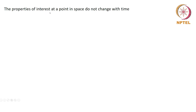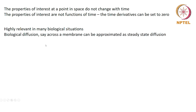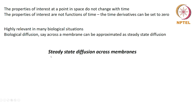As you already know, the properties of interest at a point in space do not change with time at steady state — that is the definition of steady state. What it means is that the properties of interest are not functions of time; the time derivatives can be set to zero. It is highly relevant in many biological situations. Biological diffusion across a membrane can easily be approximated as steady state diffusion in a wide variety of situations, and that is what we are going to see here in greater detail: steady state diffusion across membranes.